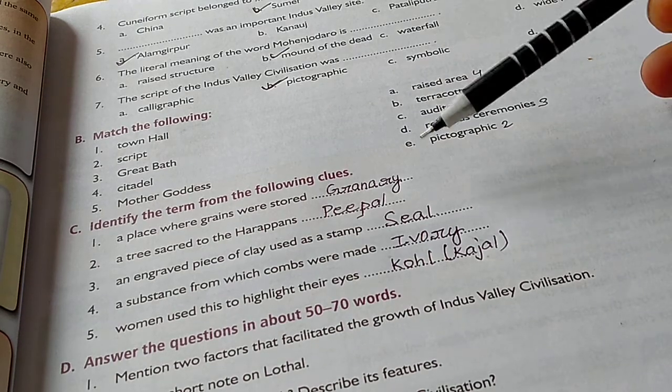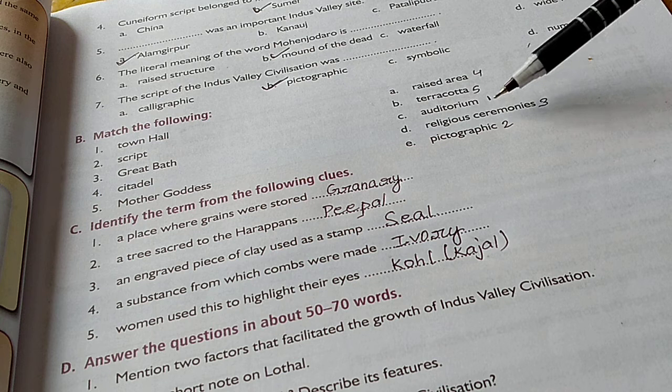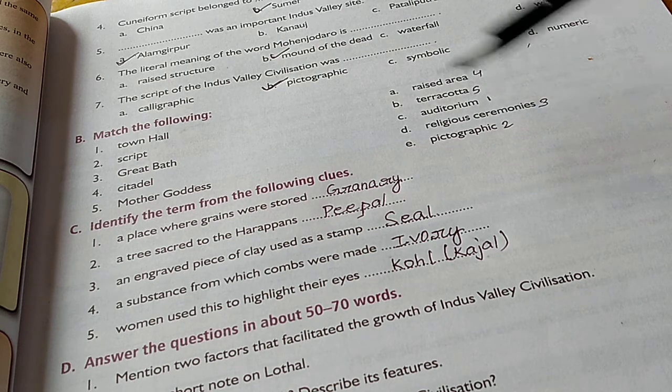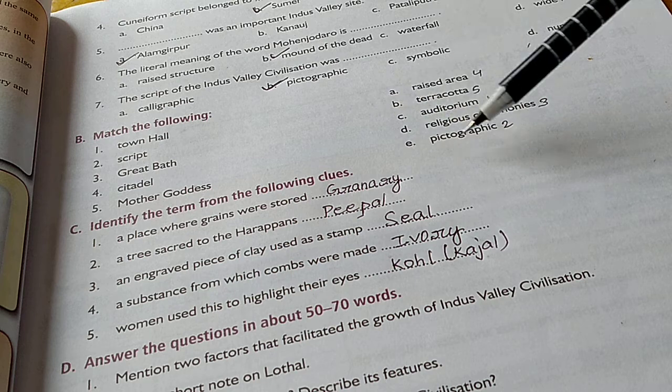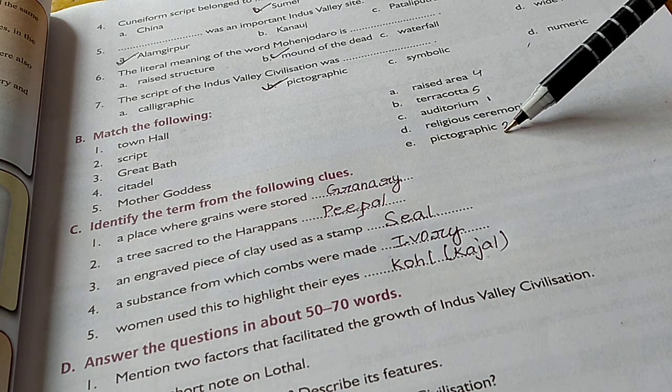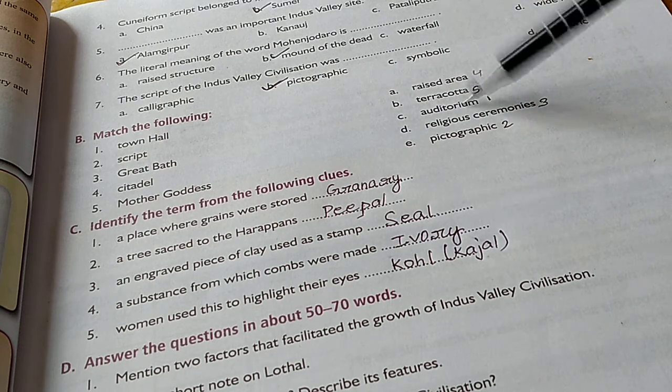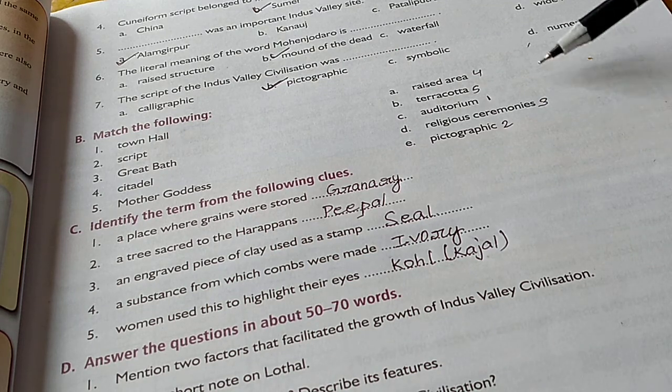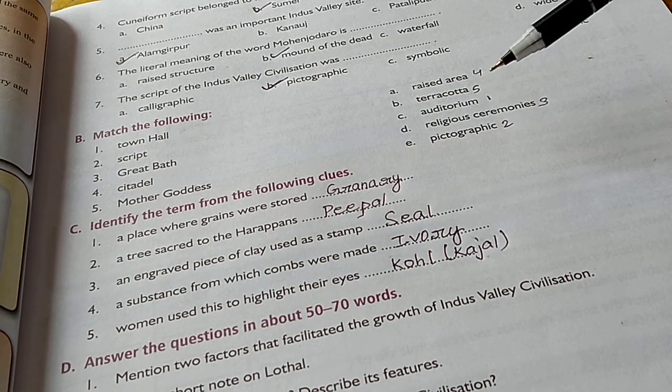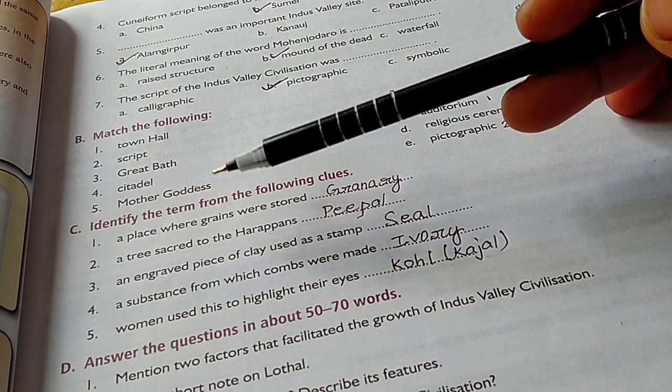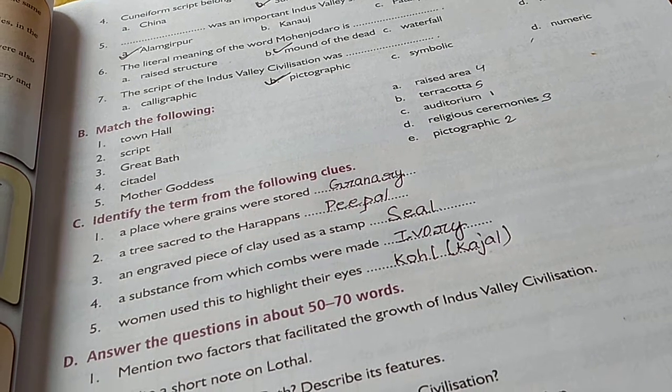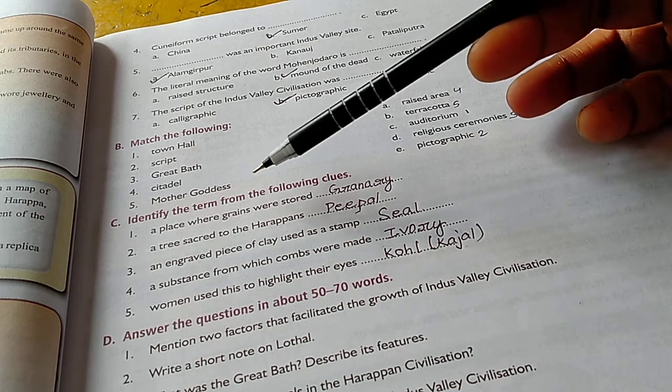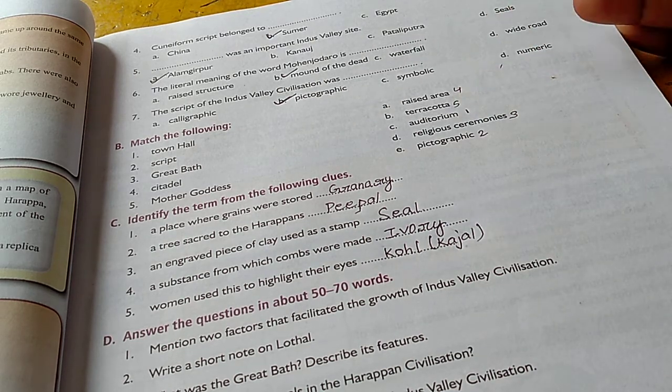Now see the match it. First one: town hall was also called the auditorium where many people gathered for meetings. Number two: script of Indus valley civilization was pictographic. Number three: great bath was used in the religious ceremonies. People would bathe in the great bath and then participate in their rituals. Fourth one: citadel was the raised area in the western side of the cities. Last one: mother goddess statue was made of terracotta.